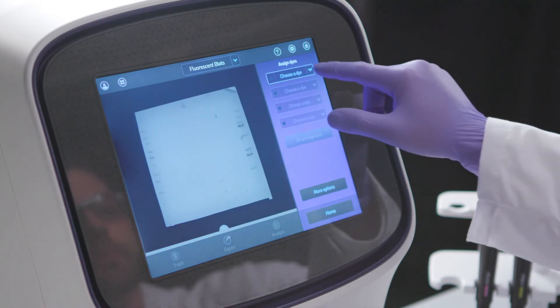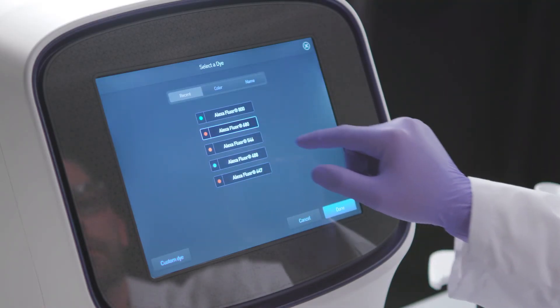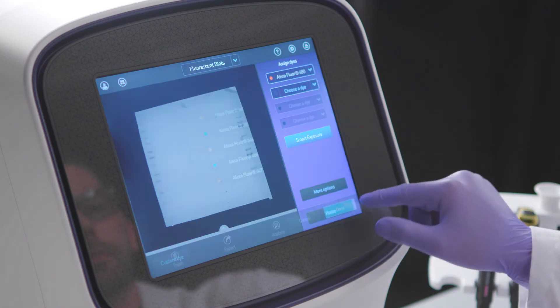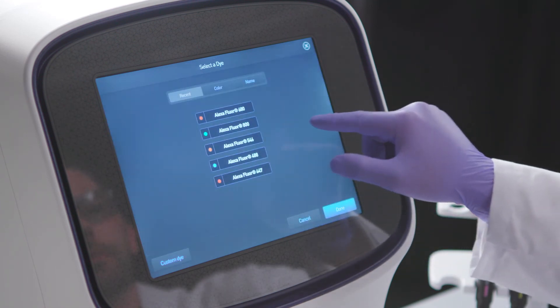Image on the Invitrogen iBright imaging system using the fluorescence detection mode. Select the Alexa Fluor 680 and 800 channels and click Smart Exposure.